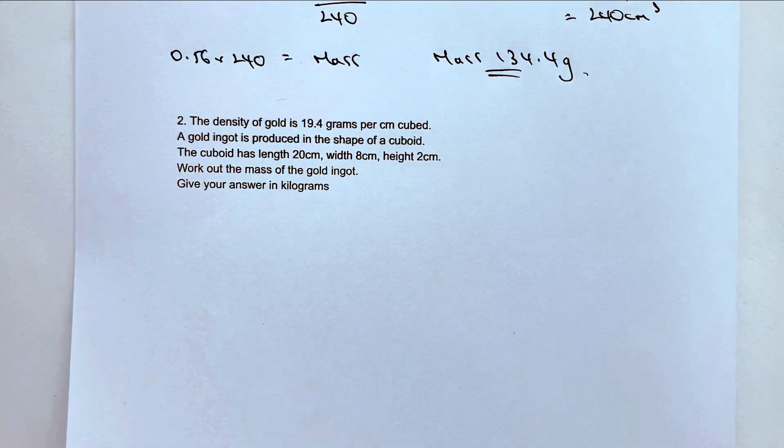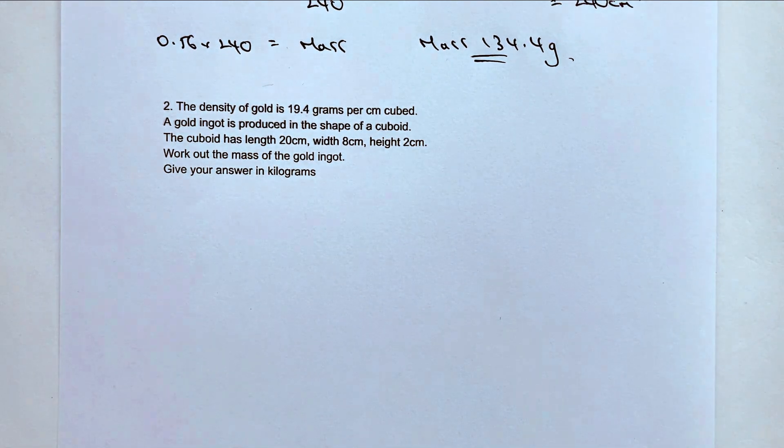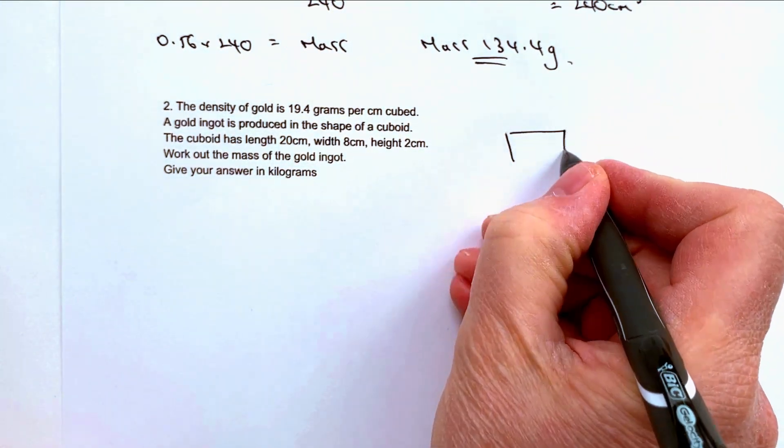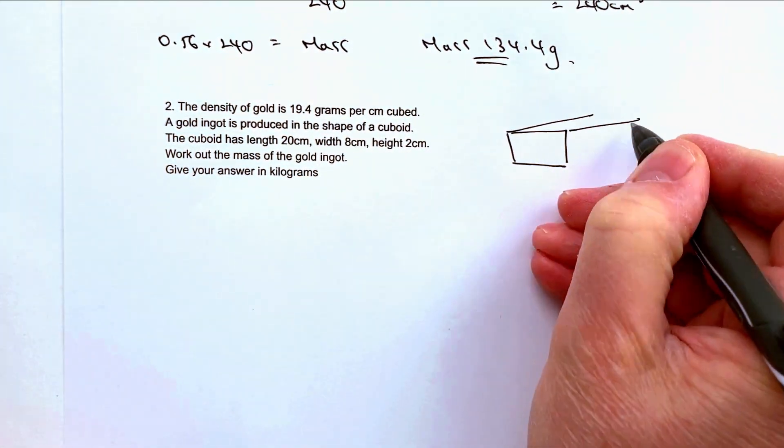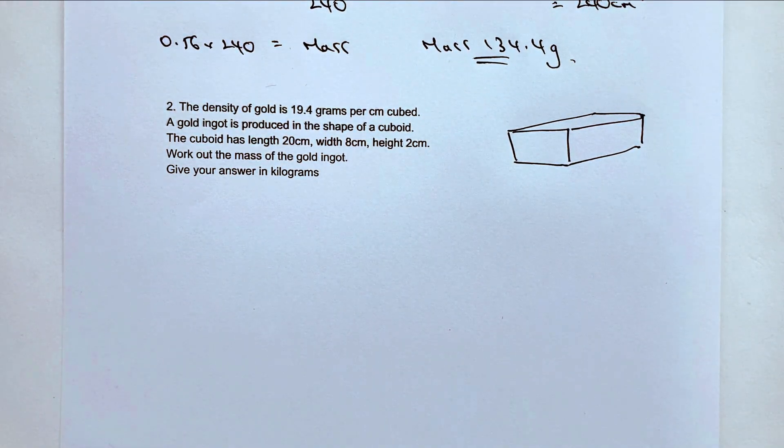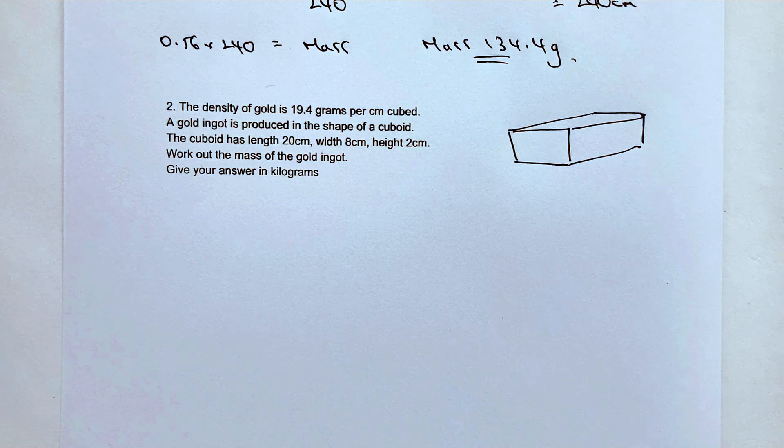And that says the density of gold is 19.4 grams per centimeter cubed. A gold ingot is produced in the shape of a cuboid. Well, that's good news. If it's the shape of the cuboid I can draw that, and I'd always advocate that you sketch these things out if you can. It just makes a lot of sense to sketch it then you can visualize.